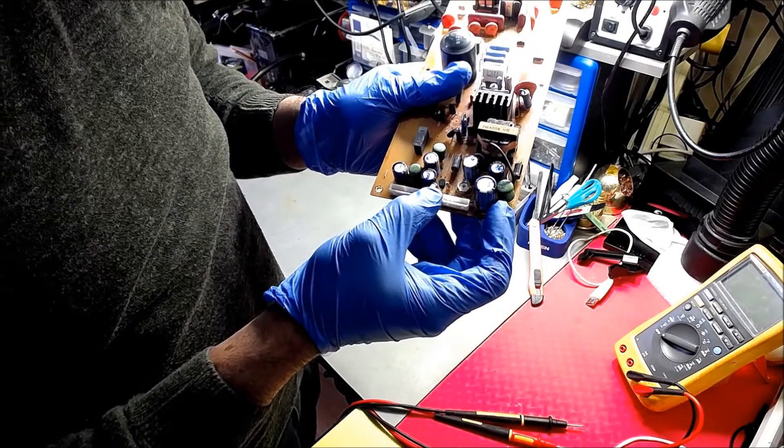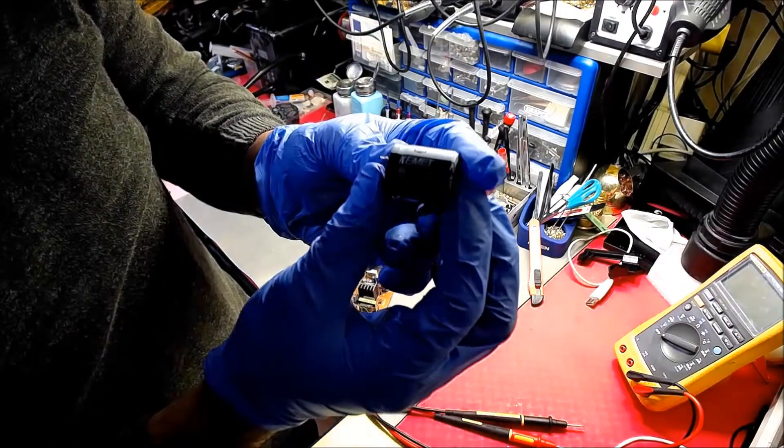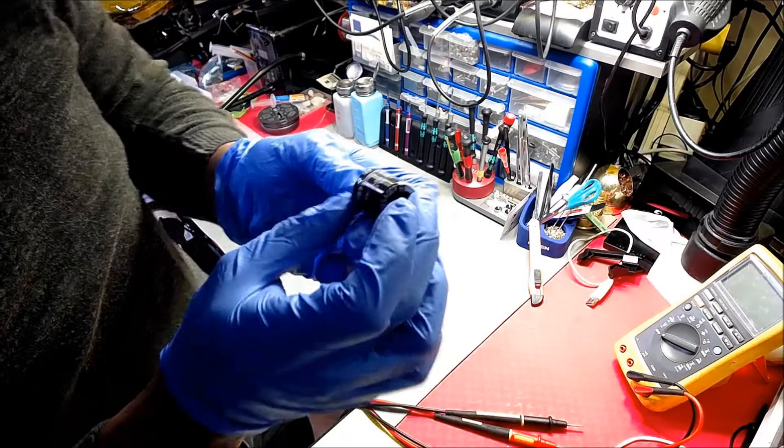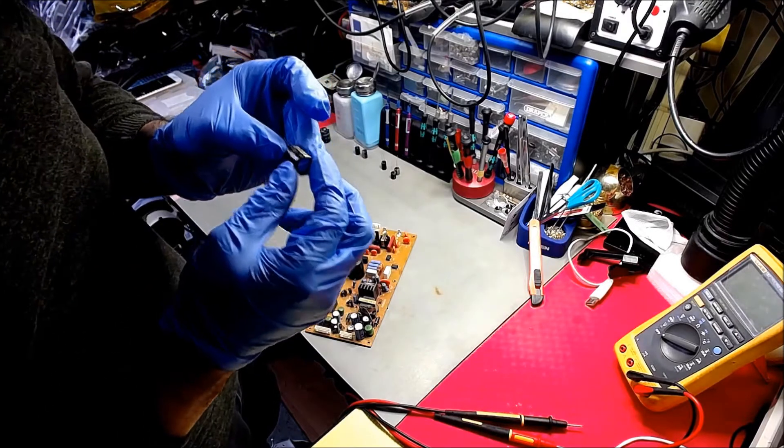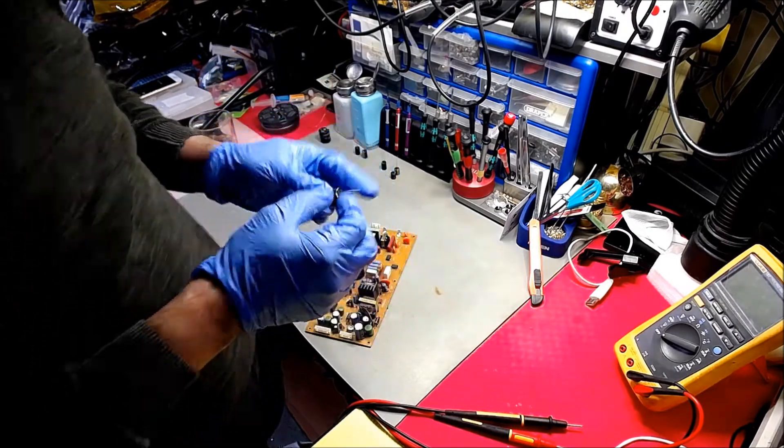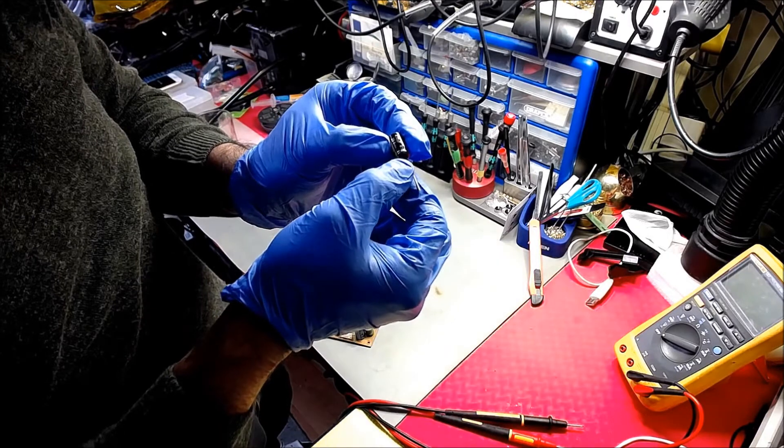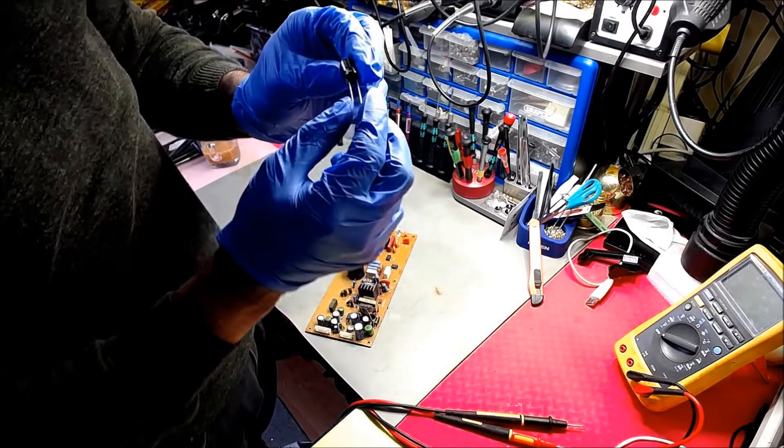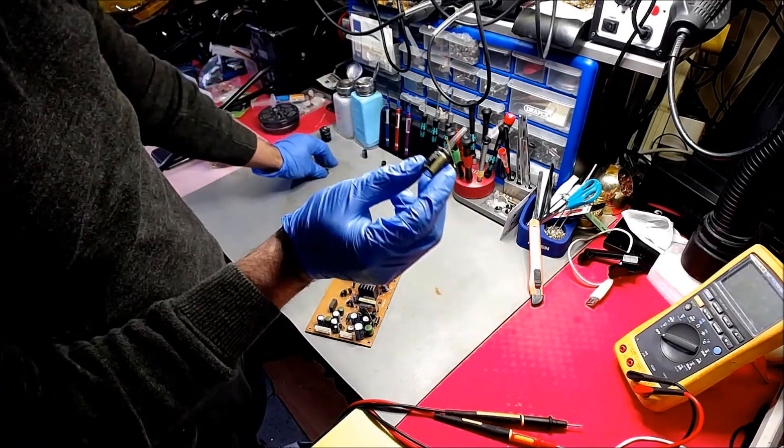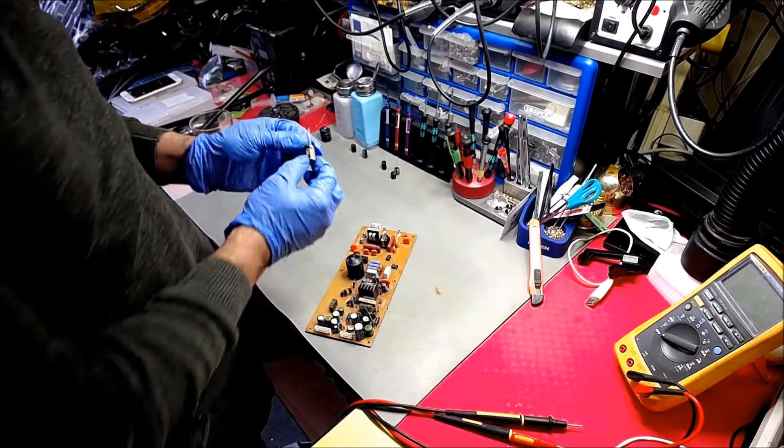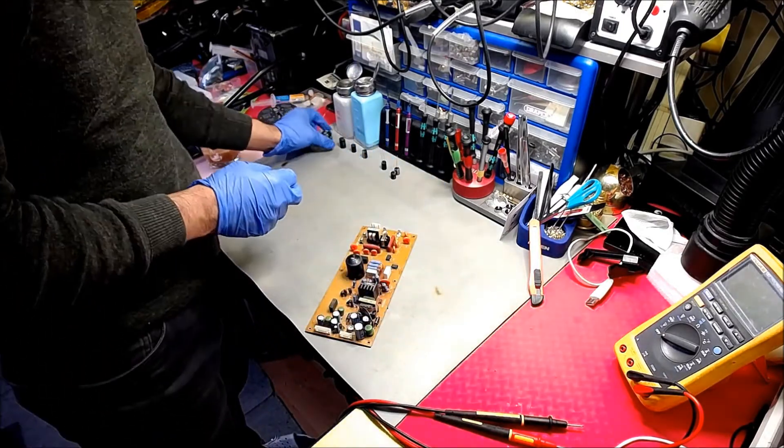I've got these, all Panasonic capacitors apart from this one. Panasonic have stopped manufacturing the 68 microfarad 400 volt. The rest I've got are 220 microfarad 10 volt, and then I've got two times 470 microfarad 25 volt. These are five mil pitch, and the 220 microfarad has 10 mil pitch.